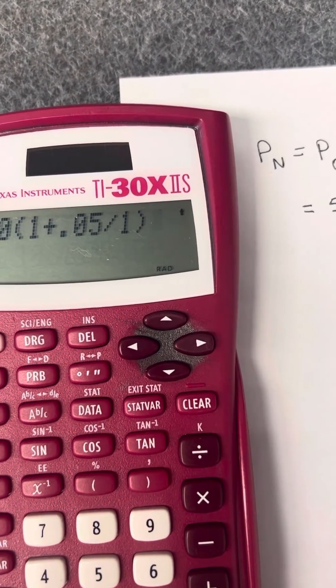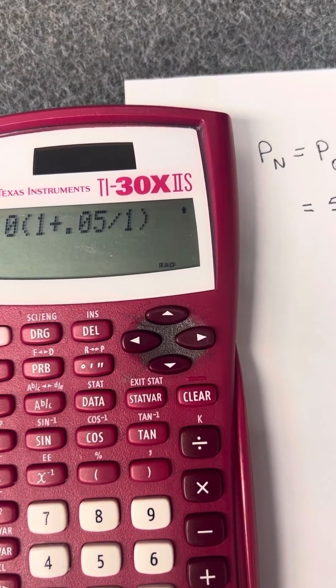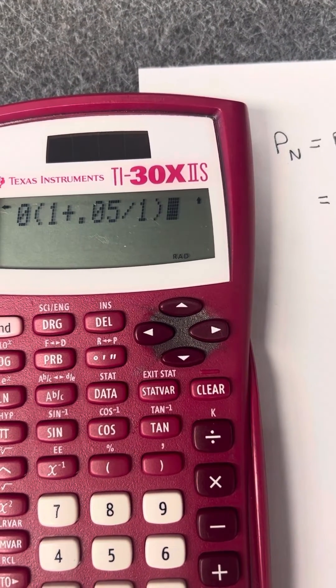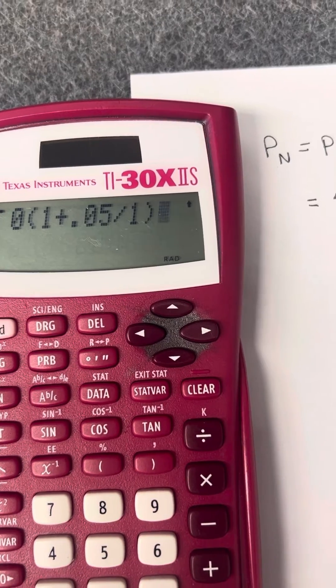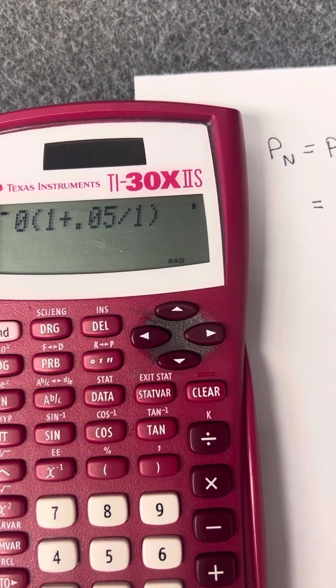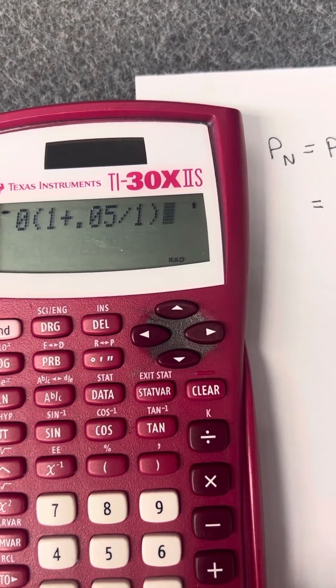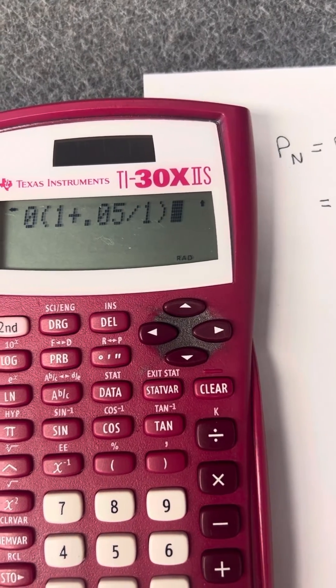Even if it's some other fraction, say if it's compounded quarterly and you have to divide it by 4, it still would work fine if you just put in whatever your interest rate is divided by that number.